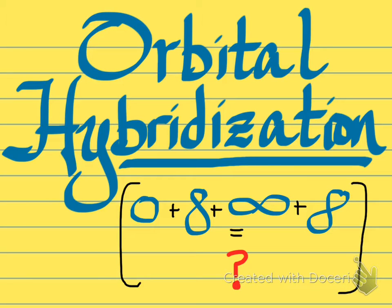Hi, it's Moser with a quick tutorial on orbital hybridization, also known as zero plus eight plus infinity plus lazy eighty equals...what?